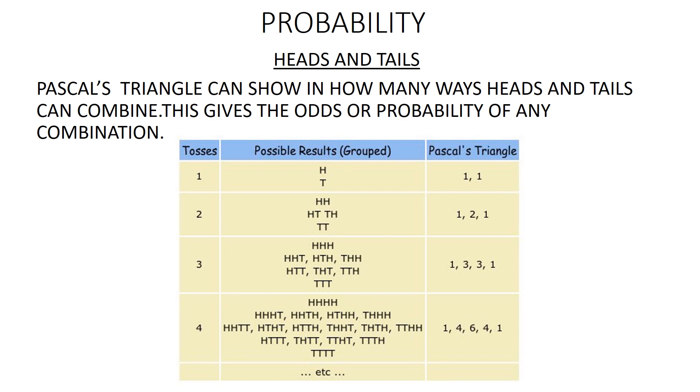Thus, the number of combinations of heads and tails are obtained from the row corresponding to the number of tosses of the coin.